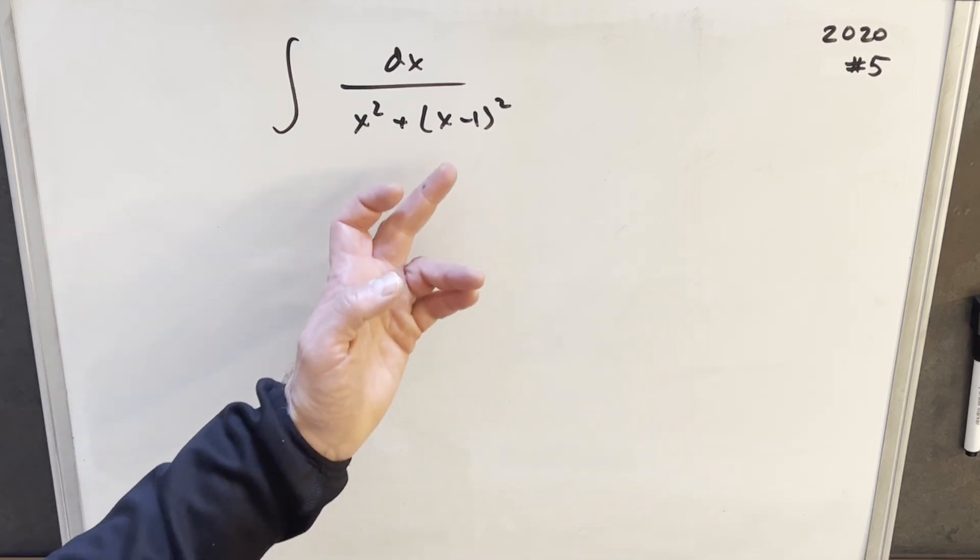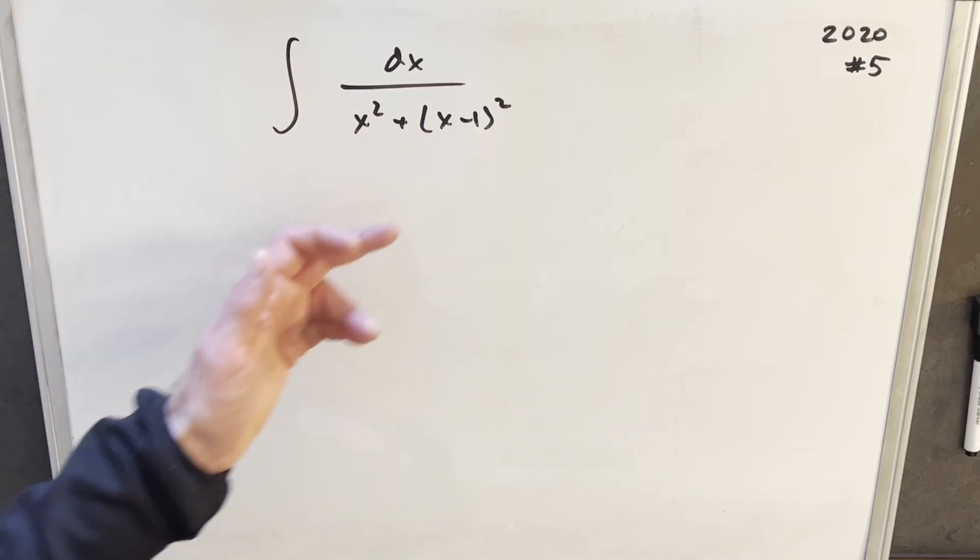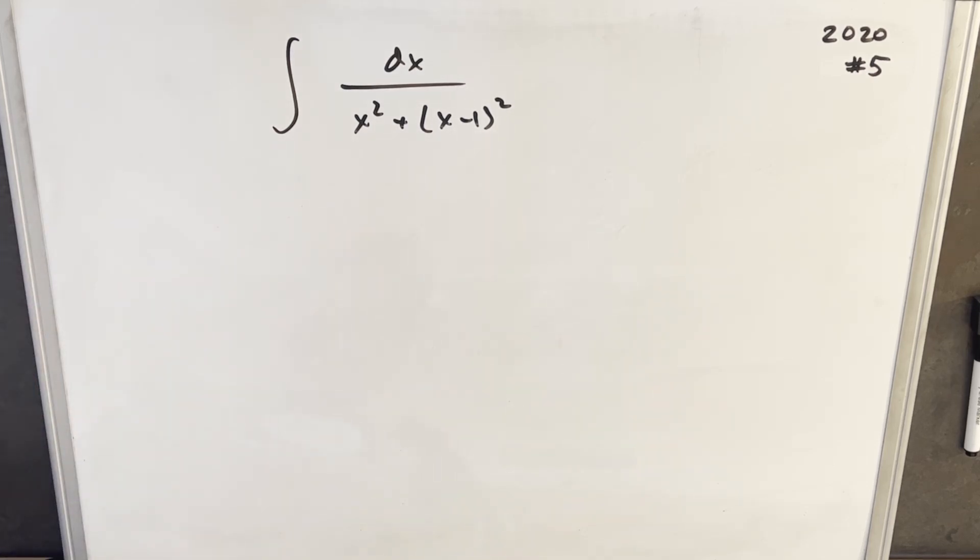It makes you think that you want to do a u substitution, like u substitution for x minus one. That simplifies this term, but then this term becomes more complicated. I don't think that really helps us. Let me know if you had some other ideas.